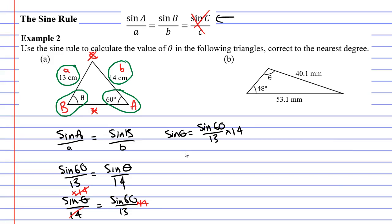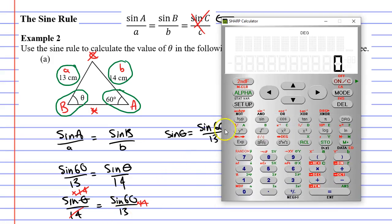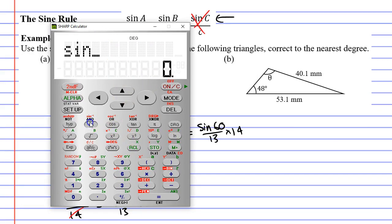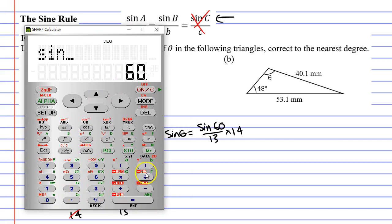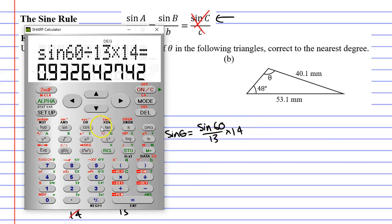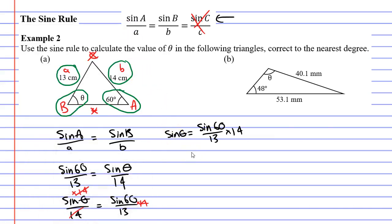Now I'm going to work out the right-hand side. I'll bring up my calculator and go sine 60 divide 13 times 14. We're faced with an issue because we're not at our final solution and we really don't like to round too early, as it might throw off our solution a little bit. For now I'll round it to 0.933, and I'll show you how we can fix this in a second. So we're going to say sine θ equals 0.933.